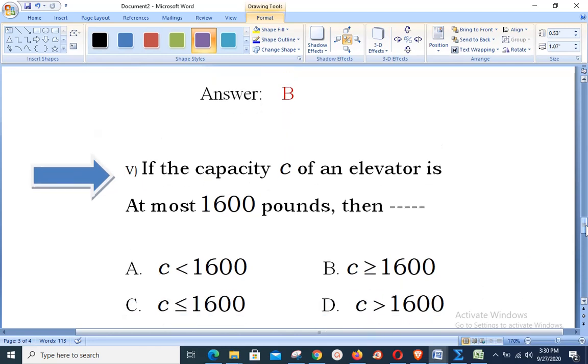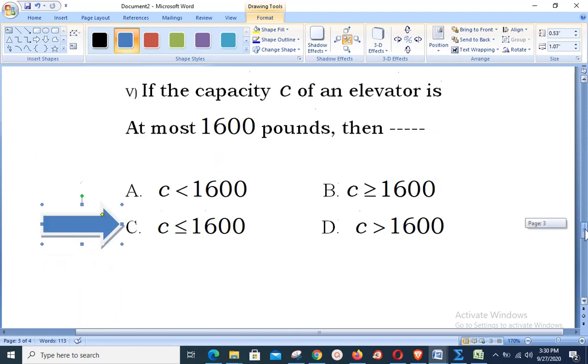Number 5: if the capacity C of an elevator is at most 1600 pounds, then what will be the value of C? At most means maximum 1600 you have. That means you may be equal to having 1600 or less than that. That leads towards option C as the correct answer.